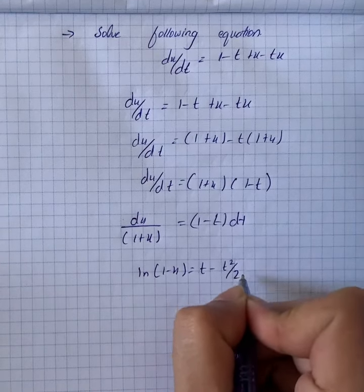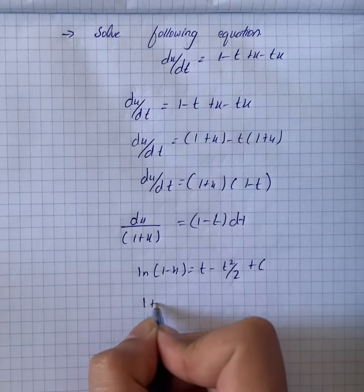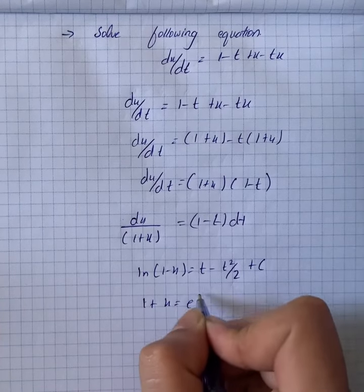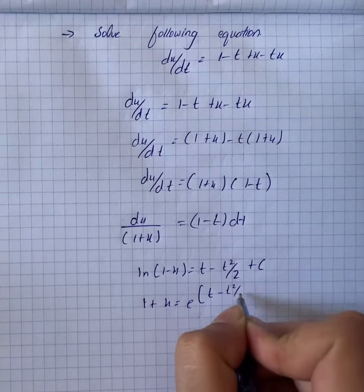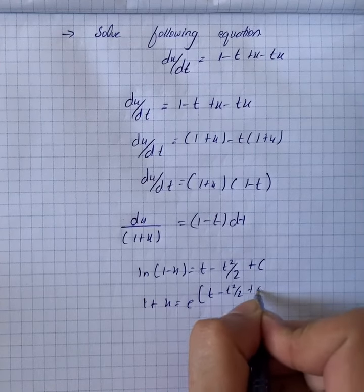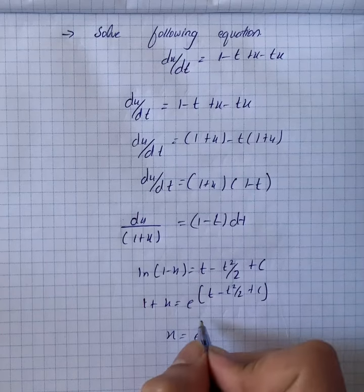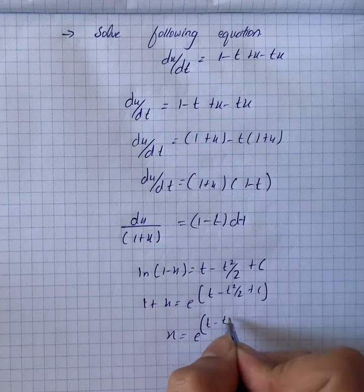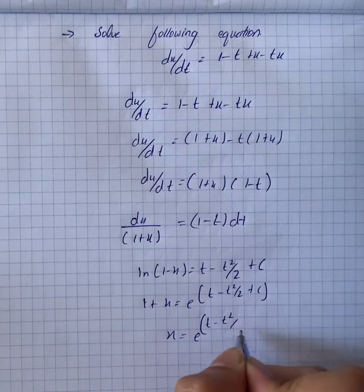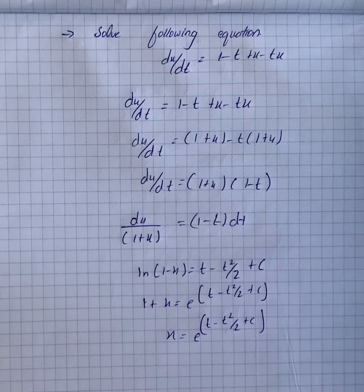So we have 1 + x = e^(t - t²/2 + c), and therefore the solution is x = e^(t - t²/2 + c) - 1.